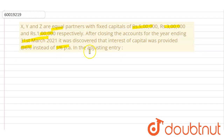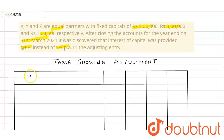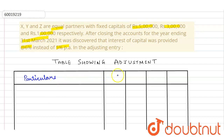Now we will show how to do this question. First of all, we will make a table showing the adjustment. The first column says particulars. The second column is for X (rupees), Y (rupees), Z (rupees), and the fourth column is for total.